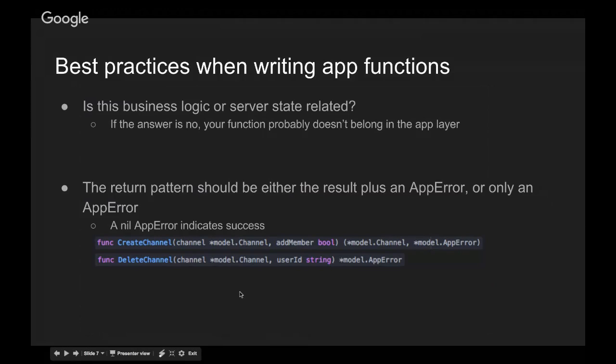We have a return pattern we use for all app layer functions. Basically, every function does one of two things: it either returns just an app error — our data model for general application errors — or it returns the result and then an application error. Like standard Go, if the application error is nil, that means success. For example, delete channel doesn't return a boolean to check success; it just uses the app error — if it's blank, it's a success; if not, it's an error — and you can use the standard Go error checking patterns.